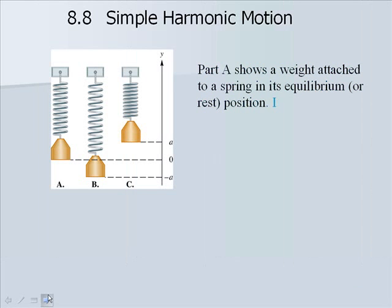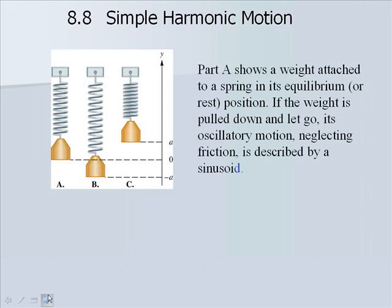Part A shows a weight attached to a spring in its equilibrium or rest position. If the weight is pulled down and let go, as we see in Part B and C, its oscillatory motion, neglecting friction, is described by a sinusoid.